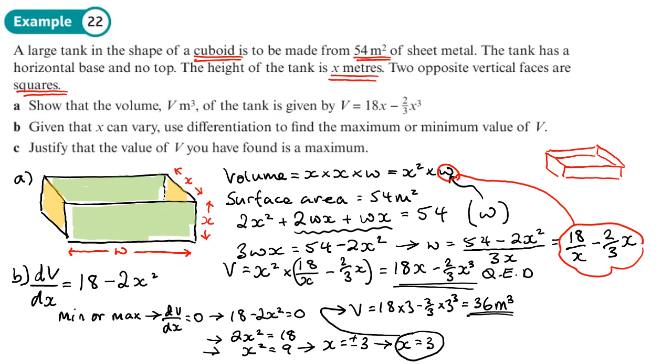Part C, justify that the value found in part B is a maximum. So the way that we do that, we differentiate a second time. So d²V/dx², this is part C here. We differentiate a second time. That will just leave us with negative 4x. We put the value of x in. And when we do that, we get negative 12. Whenever you get a value which is negative, it means you found a maximum. So this is a maximum volume since this second derivative is less than zero. Less than zero means you found a maximum. Greater than zero means you found a minimum.